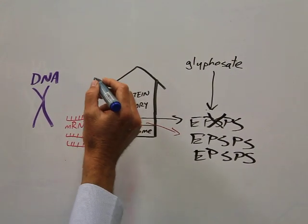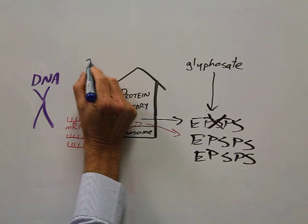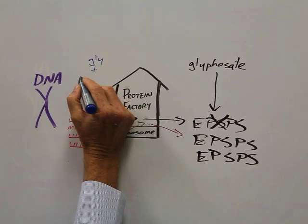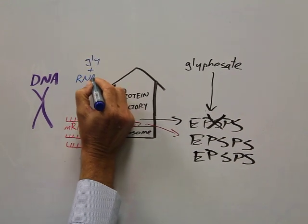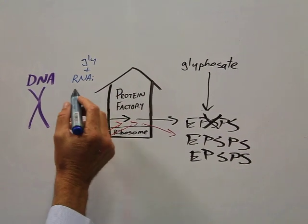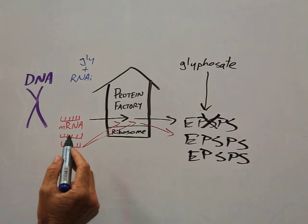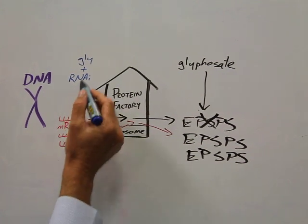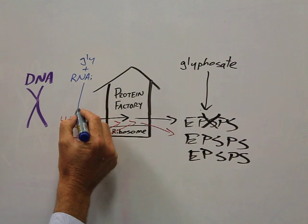Monsanto's research shows that if we spray glyphosate plus RNAi, the I in RNAi stands for interference. Monsanto have worked out how to put small fragments of RNA into a drum in a stable form, and what they do is spray it onto the plant like a herbicide.